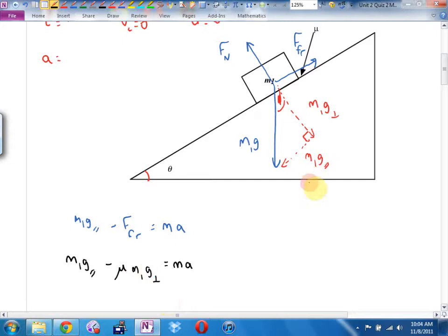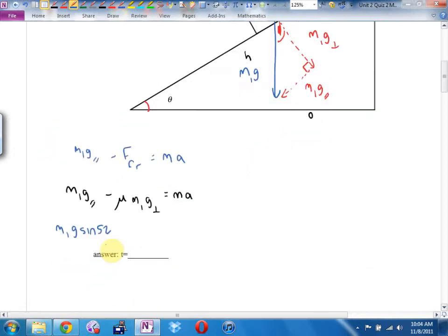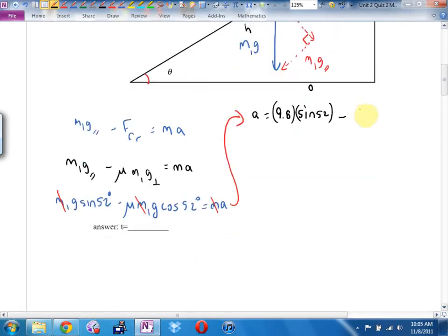Let's do a bit of trig. Parallel is opposite hypotenuse. I think parallel is sine M1G cosine of 52 degrees. Perpendicular ends up being M1G cosine of 52 degrees, and that equals MA. This one's kind of nice. Is there a mass in every single term? Then in this case, masses cancel.